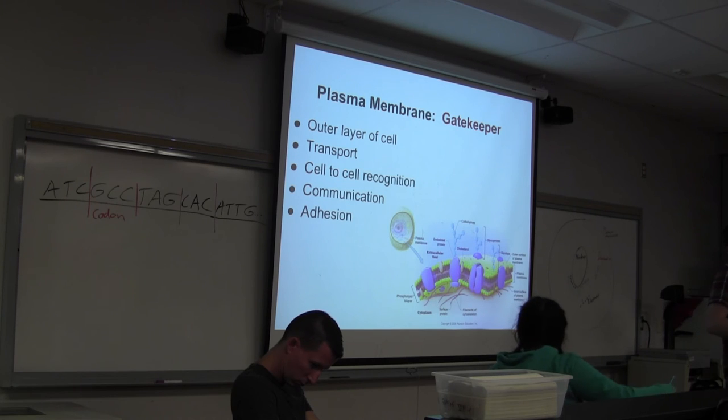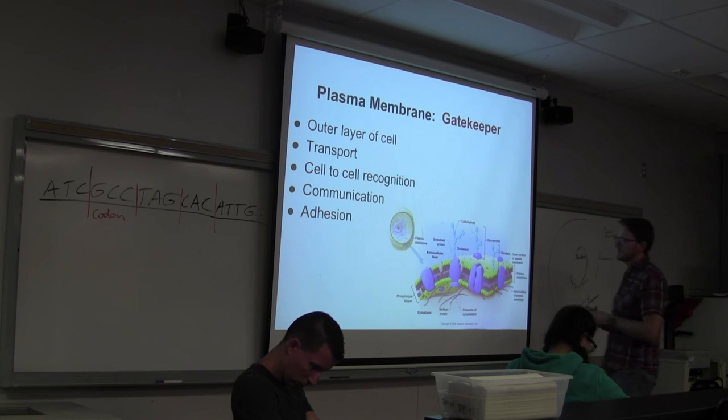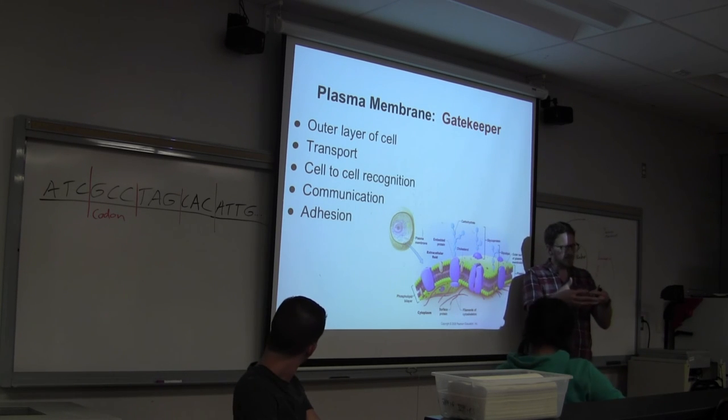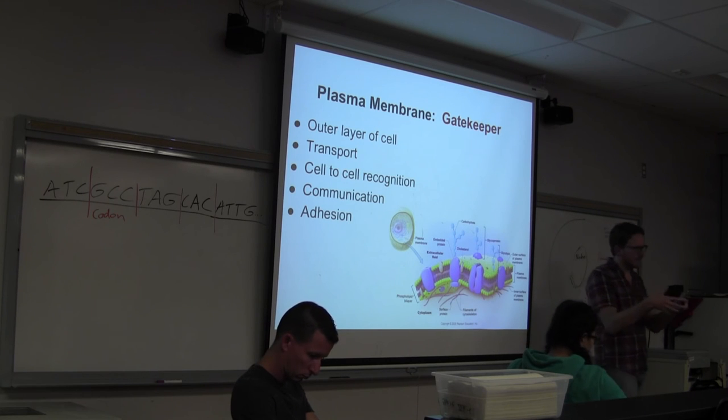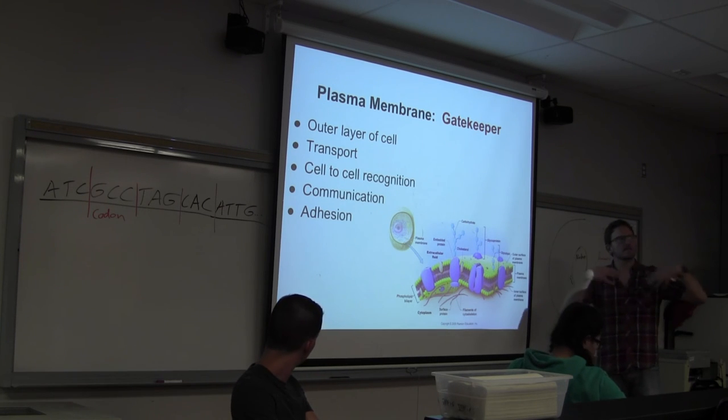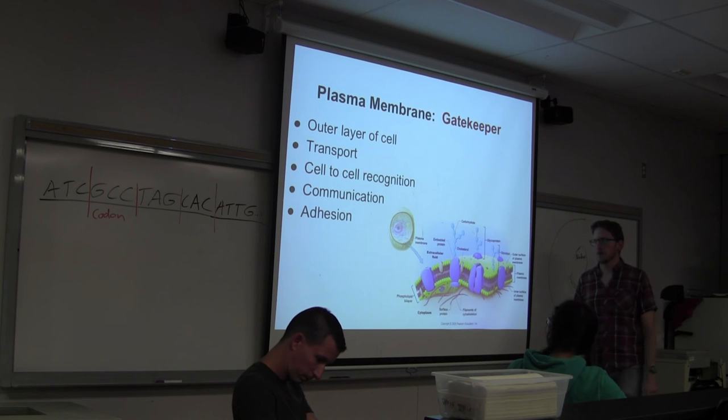And adhesion, you'll see that this is how cells stick together, is through their plasma membrane. So a lot of your muscle cells, basically, are attached to each other at the plasma membrane in very specific ways. So then when one pulls, they all pull together. Because you need this for the tissue to function properly.